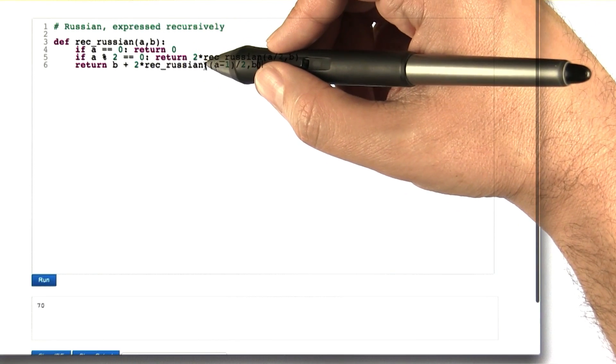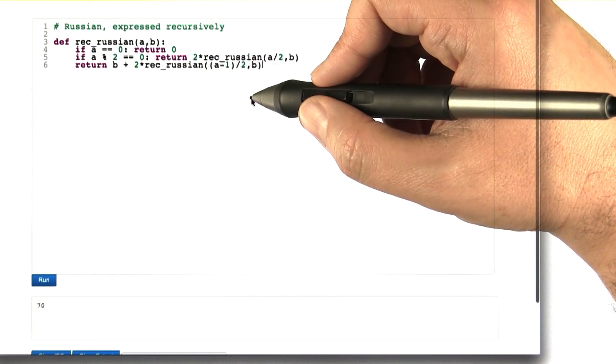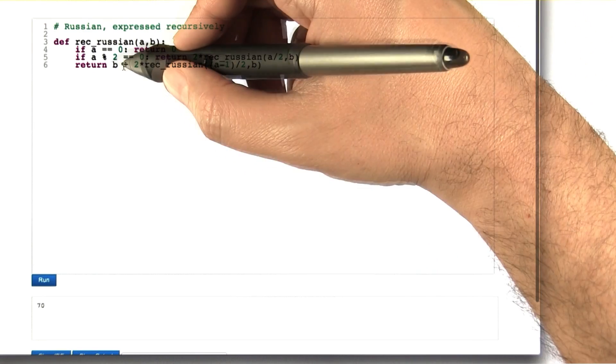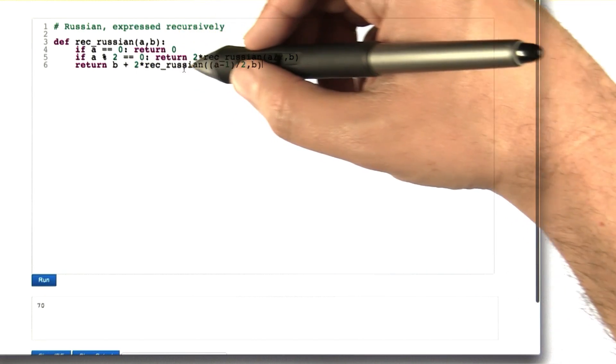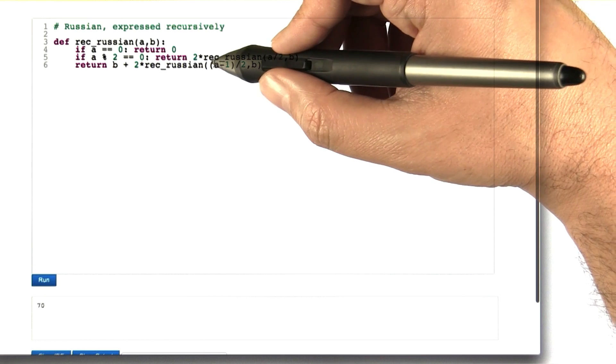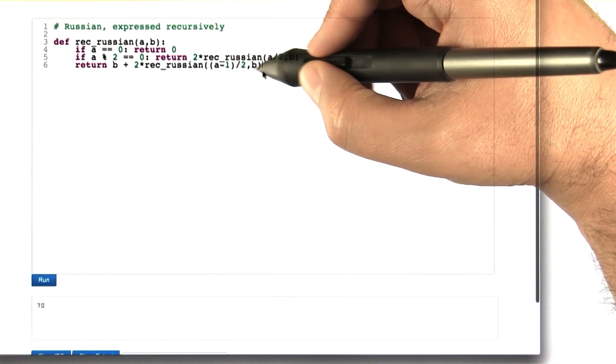In the case where it's odd, it's a little bit more complicated. Pull one of the b's out. We're actually adding a b's together, but a is odd. So let's pull one of the b's out and add to that what's left. There's a minus 1 repetitions of b that we're adding together, but a minus 1 is now even. So we can compute what a minus 1 over 2 times b is recursively.